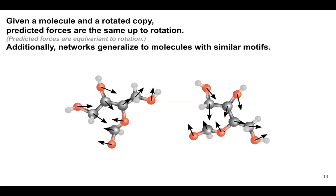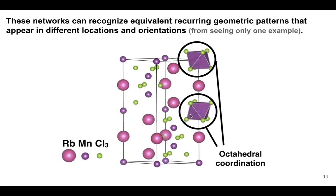If you want to predict forces on a molecule, you're guaranteed to predict the same forces even if the molecule is rotated. You'll also generalize well to molecules with similar subgroups or motifs. In a crystal setting you often have coordination environments — for example, in rubidium manganese chloride a manganese atom is octahedrally coordinated by chlorine. The model can simultaneously identify identical motifs while remaining sensitive to their relative orientation differences.